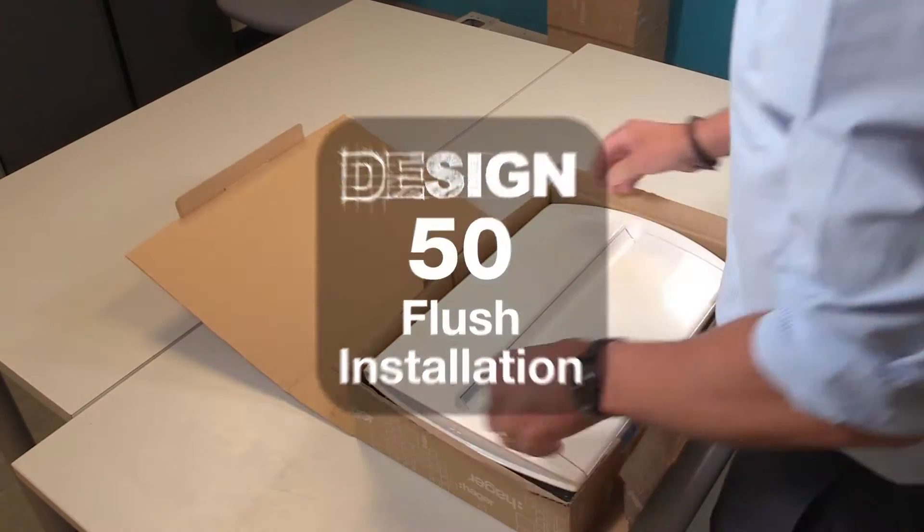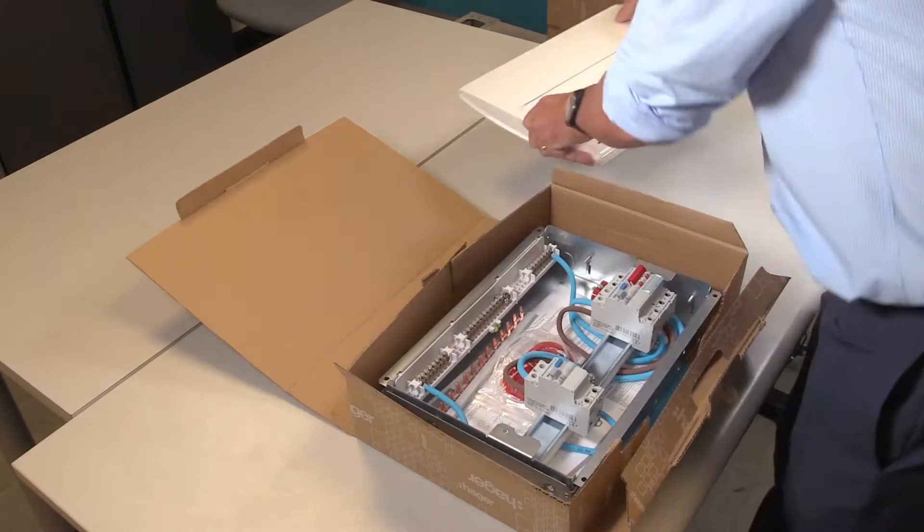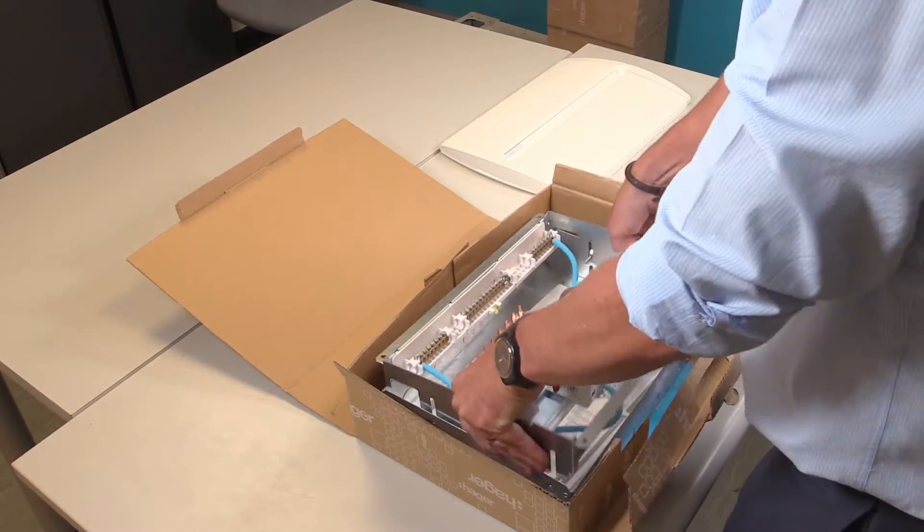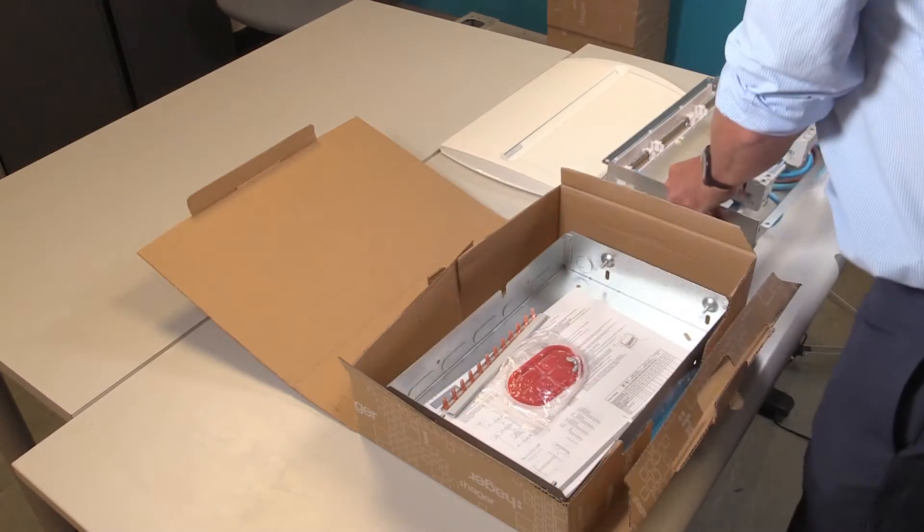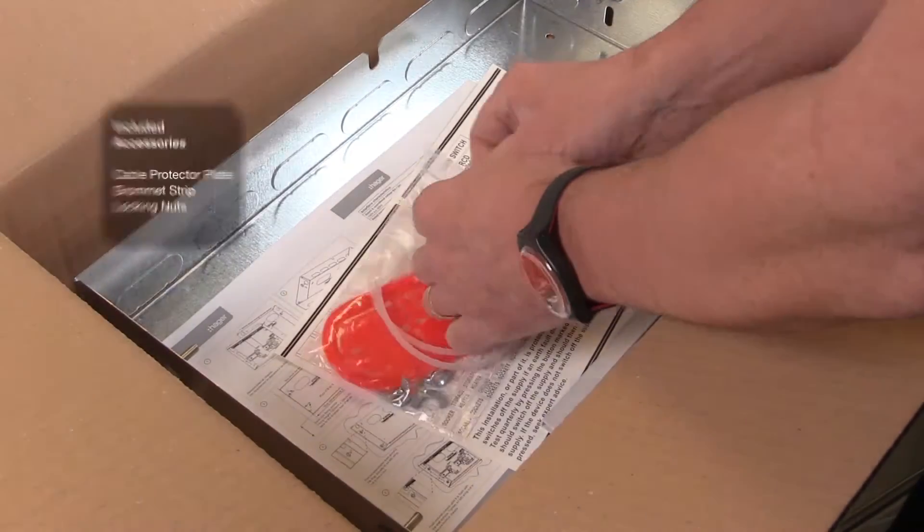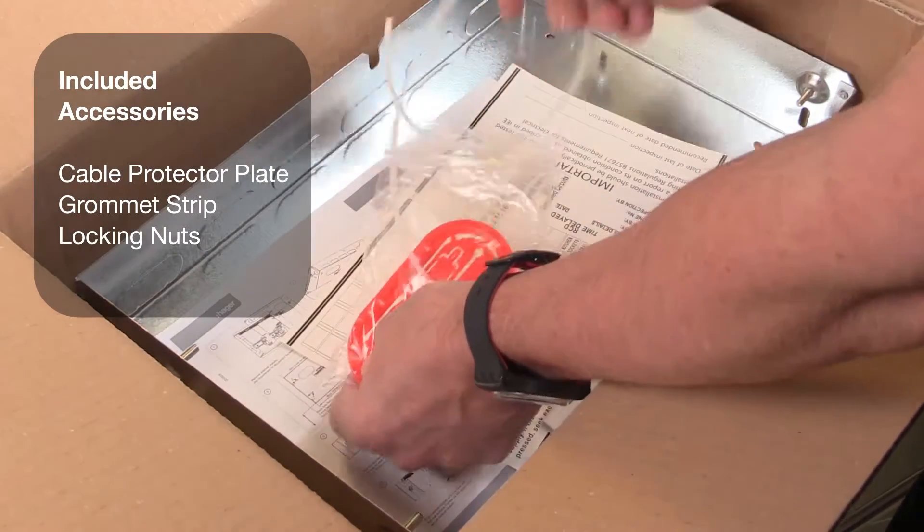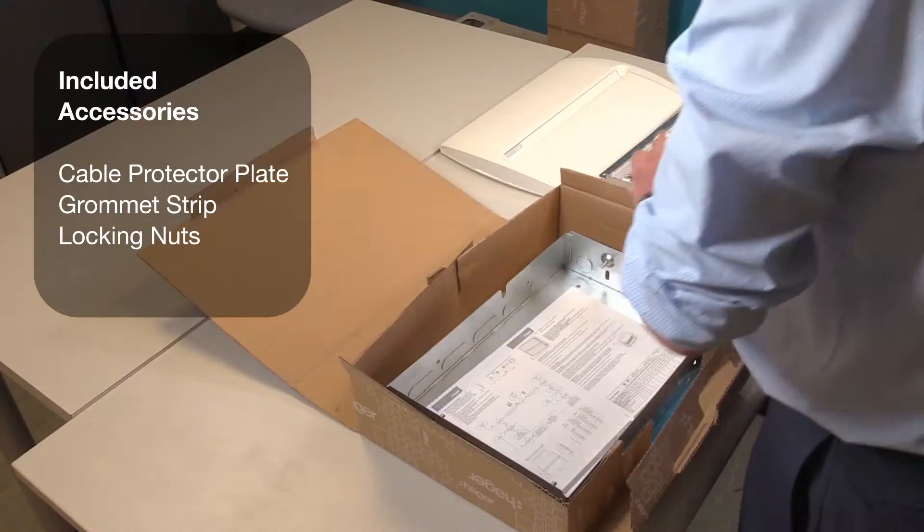As you open the box, you'll see the consumer unit. First, remove the front cover and door assembly, then extract the chassis from the back box. You will see there is an accessory pack containing a cable protector plate for the rear knockouts, some grommet strip, and wing nuts for later.